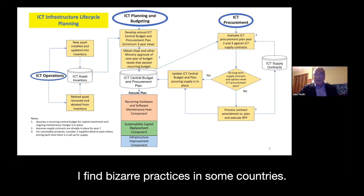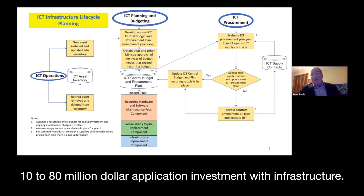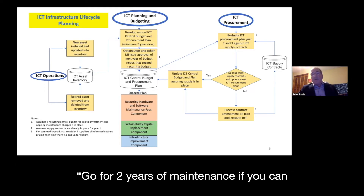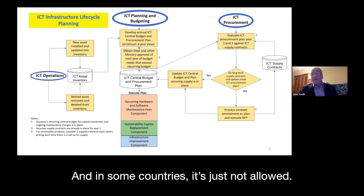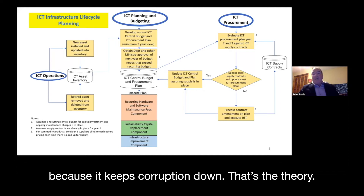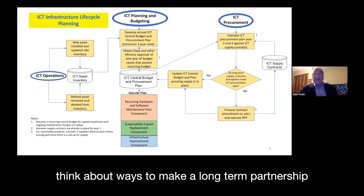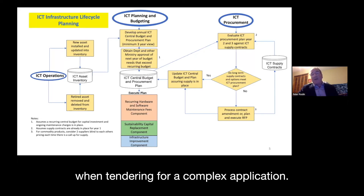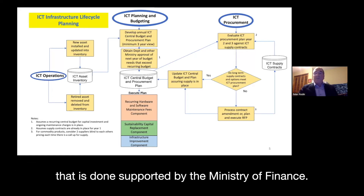I find bizarre practices in some countries. When coaching people on a major IT investment for a new tax solution — which is a 10 to 80 million dollar application investment with infrastructure — the advice is always: go for two years of maintenance in the contract with the vendors, and try to have options for at least five additional years, because the firm that built it knows it best. In some countries this is actually against the law — there's a practice of changing suppliers every two years to keep corruption down. I encourage finding ways to make a long-term partnership when tendering for a complex application.